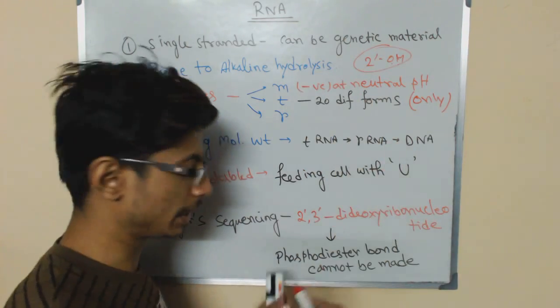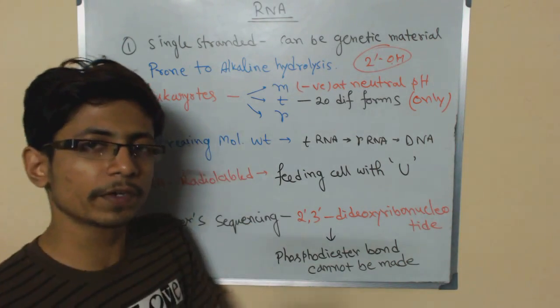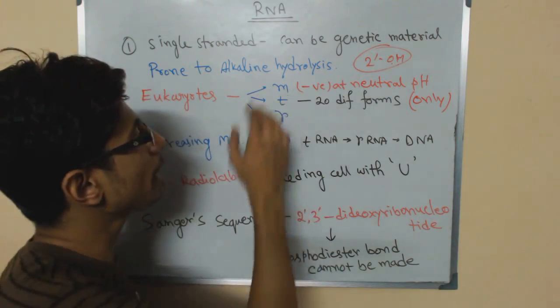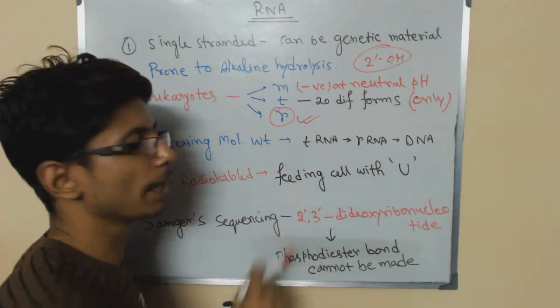Now in eukaryotic system, RNA can be of three different types: mRNA, rRNA, and tRNA. Among them, rRNA is the most predominant type, present in maximum amount.